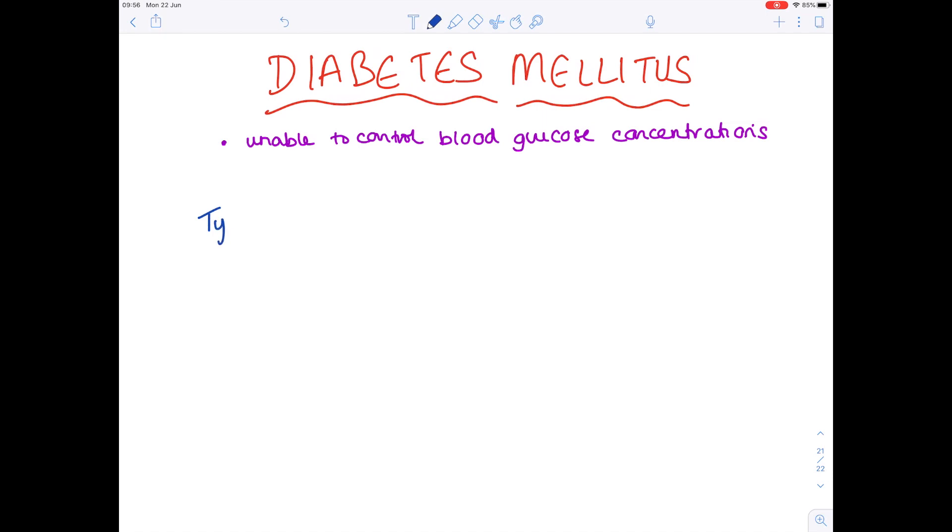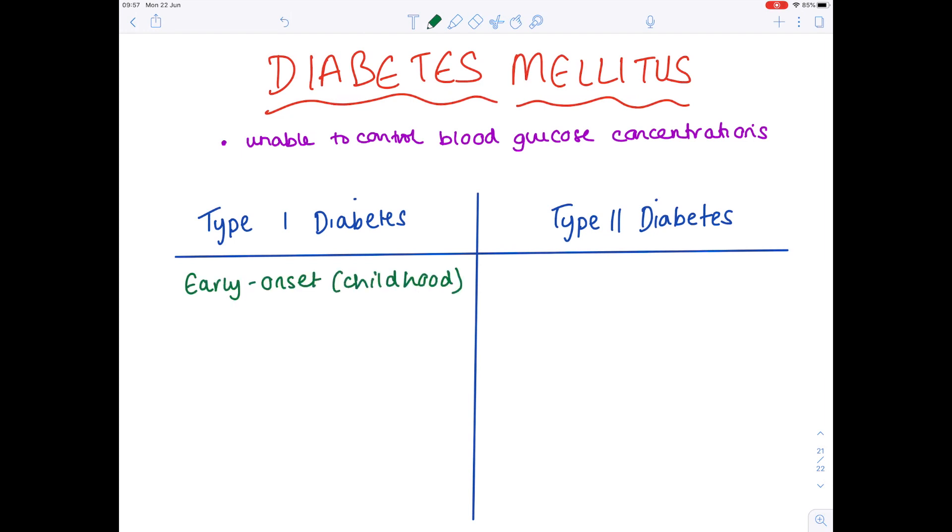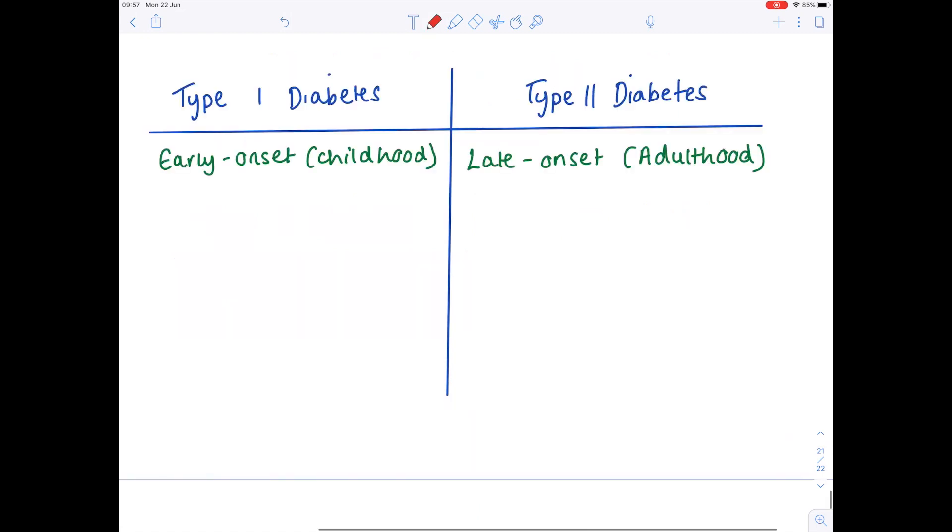So we're going to compare type 1 and type 2. So type 1 diabetes it's early onset so it occurs during childhood whereas type 2 diabetes is late onset and it occurs during adulthood. Now they have very different causes. With type 1 diabetes you find that it's an autoimmune disease whereby your body destroys beta cells in the pancreas meaning that obviously insulin can no longer be secreted.